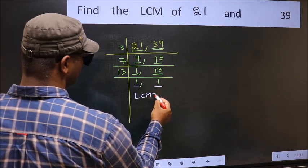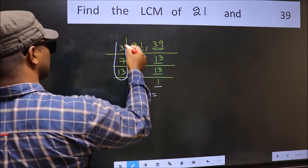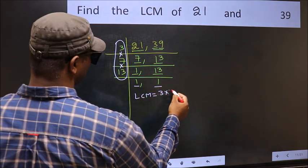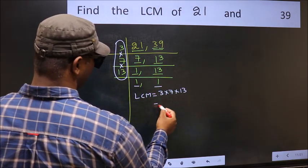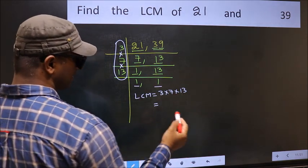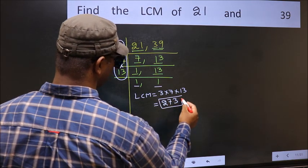So our LCM is the product of these numbers. That is 3 into 7 into 13. When we multiply these numbers we get 273 as our LCM.